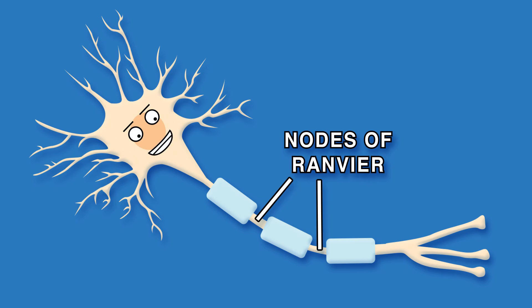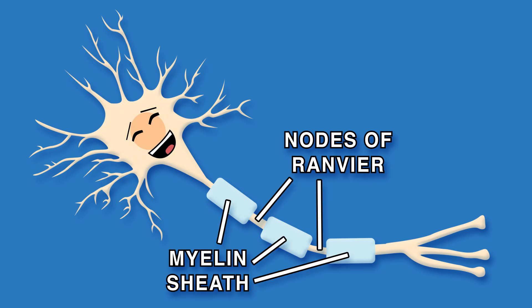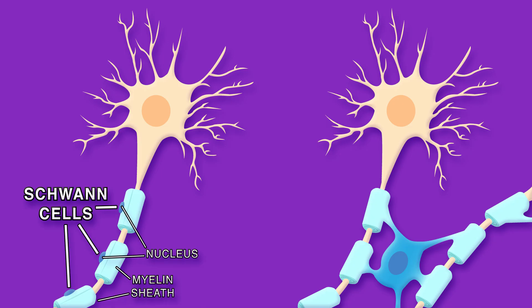Between the nodes of Ranvier, the axon is insulated. The axon is wrapped in myelin sheath, which is created by Schwann cells in the peripheral nervous system, and oligodendrocytes in the central nervous system.